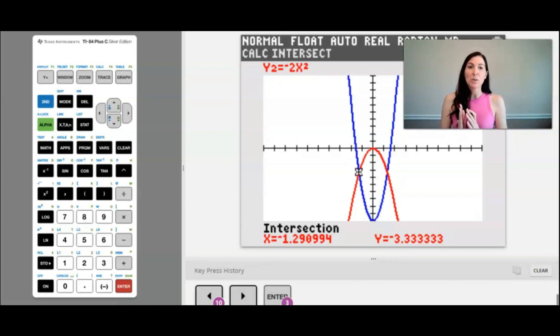Now notice I'm using the x values because I'm doing top minus bottom which means I'm going to add an infinite amount of rectangles from left to right, so it's going to be a dx problem, so I want to use the intersection values that are x's.